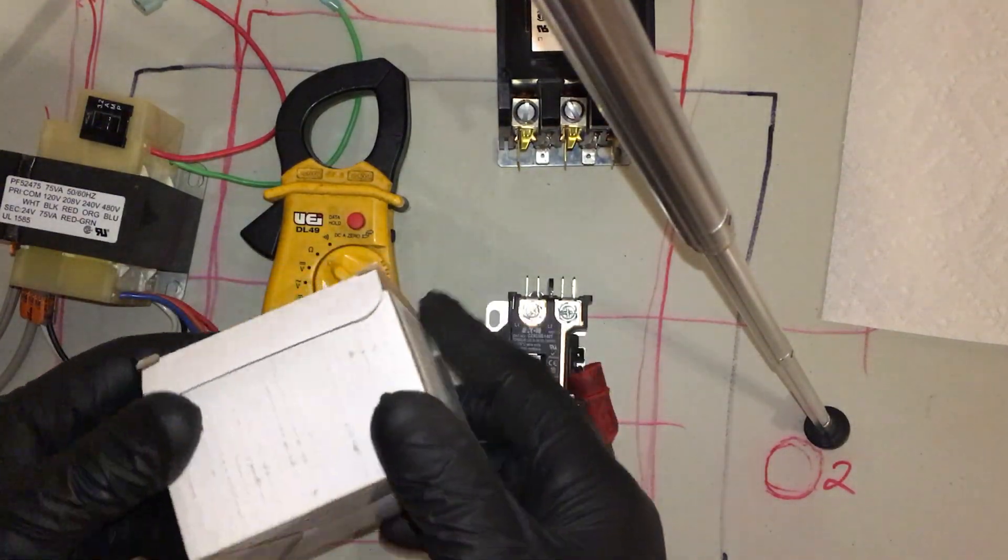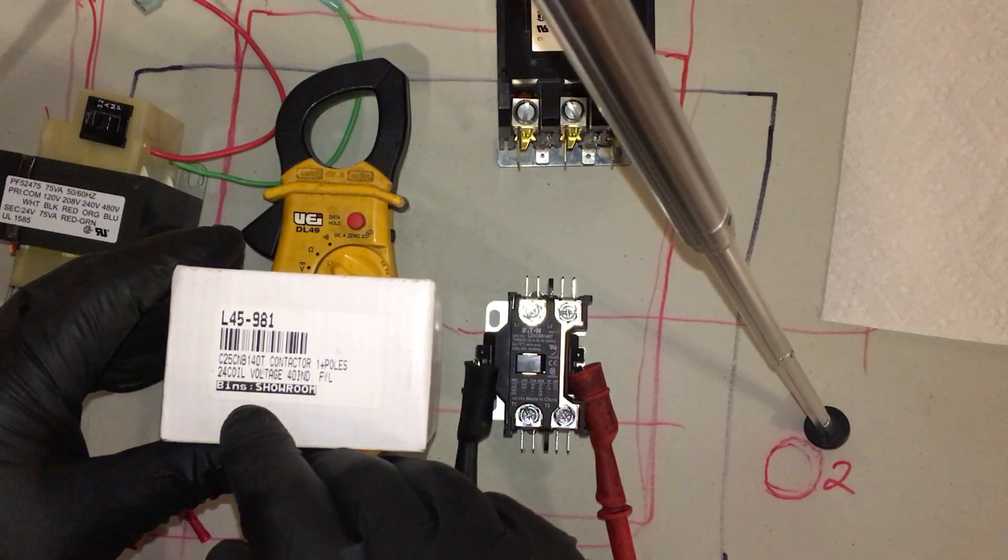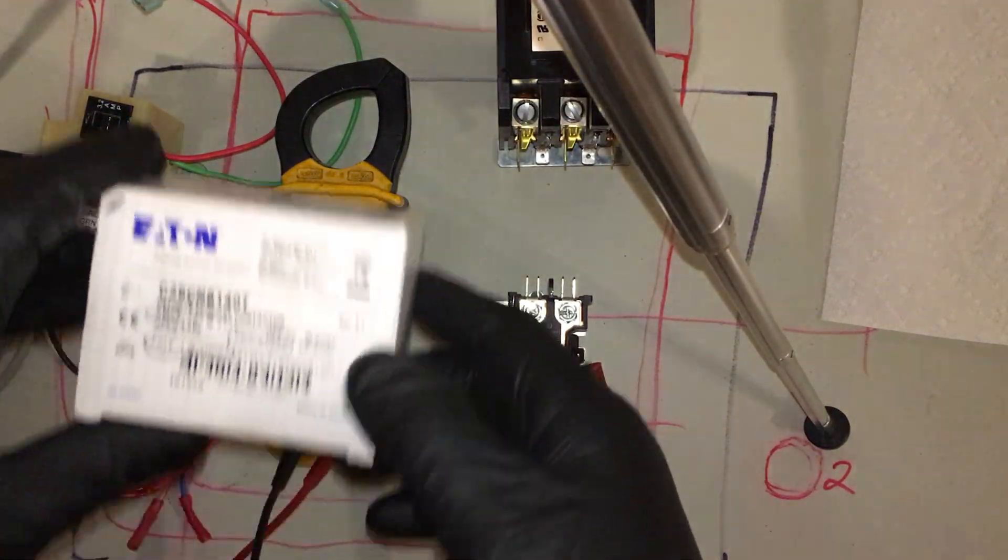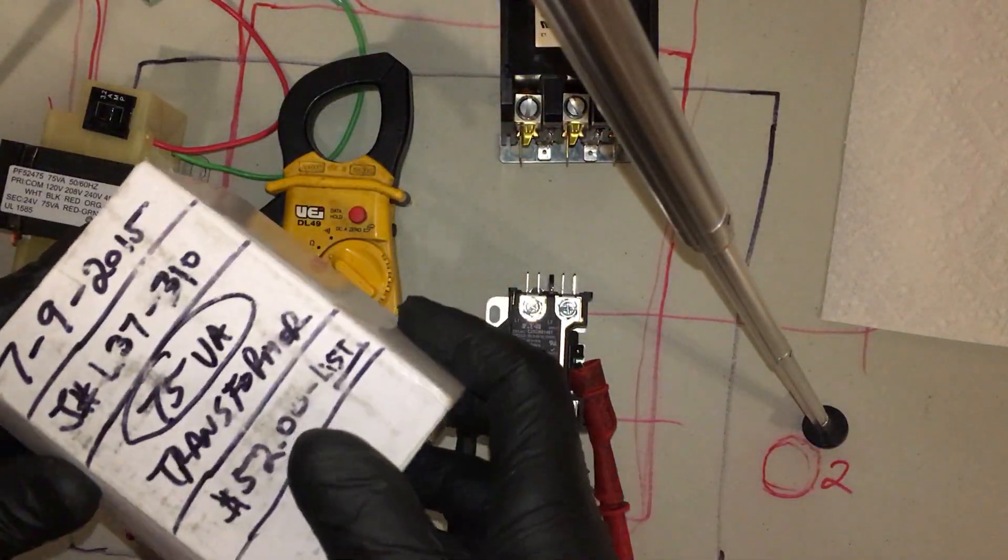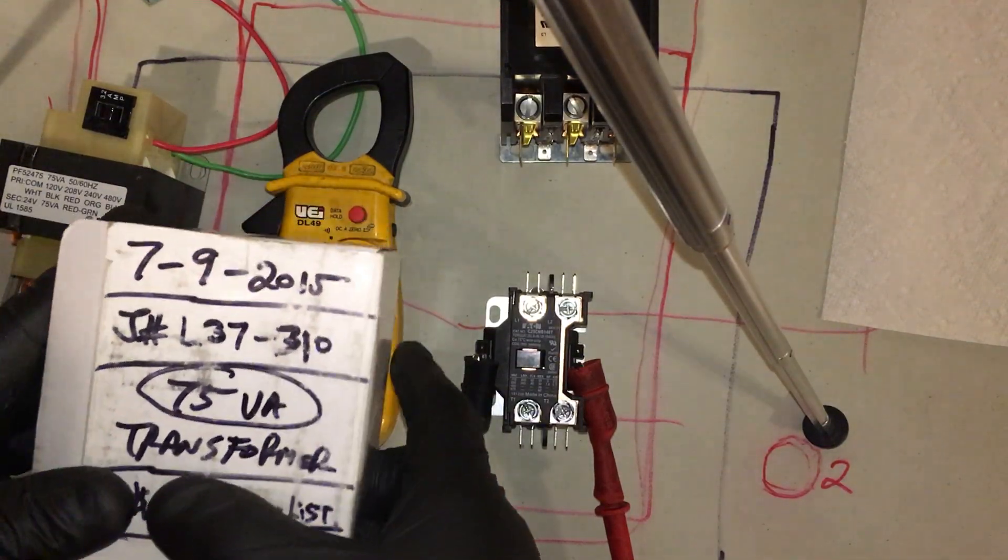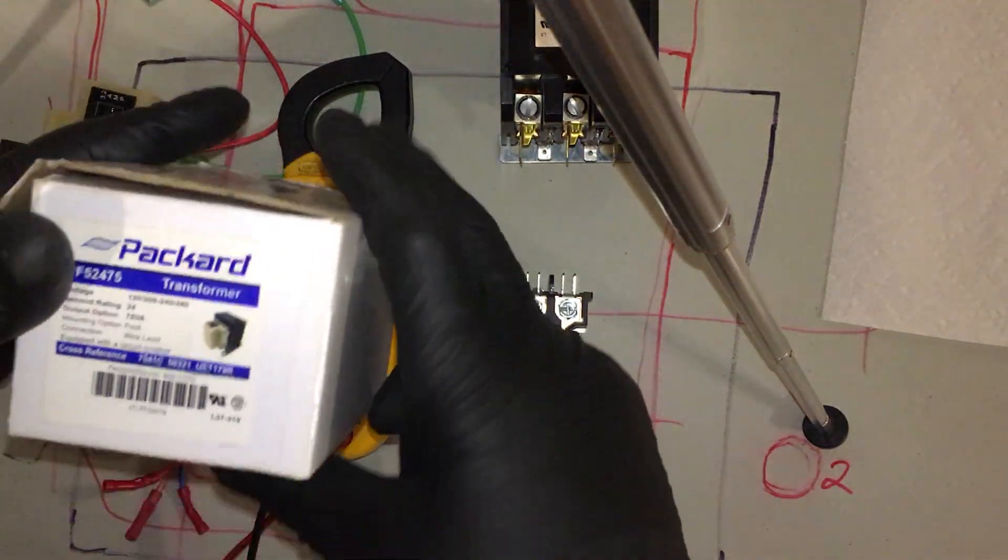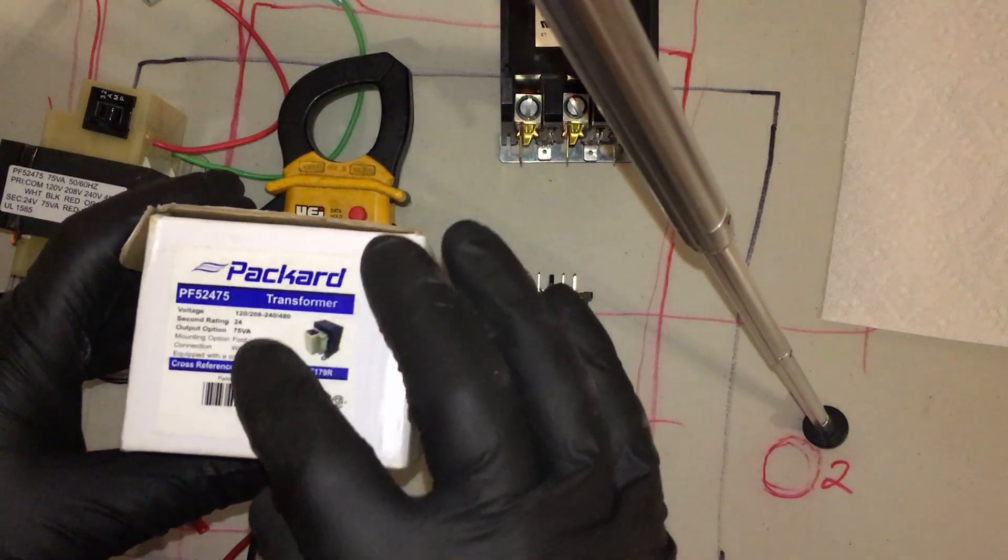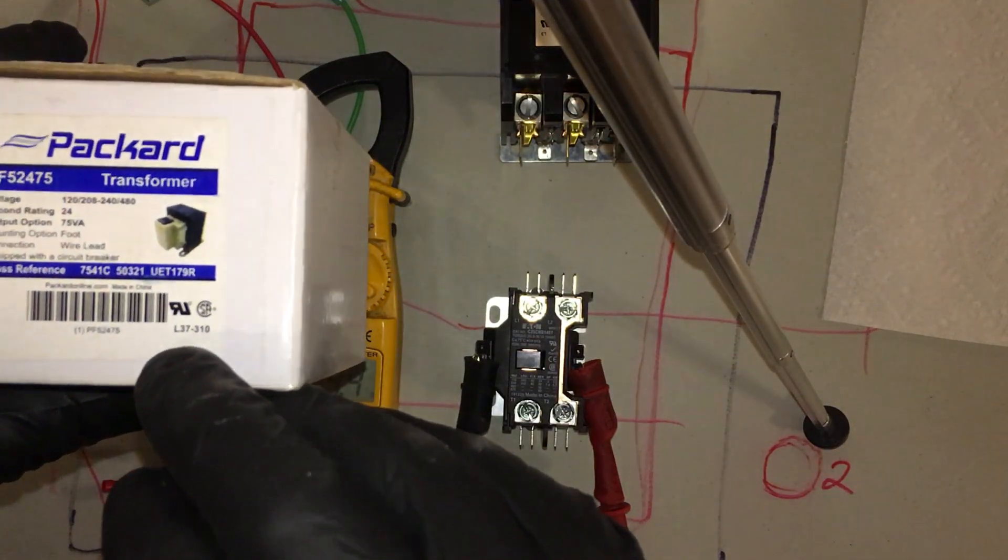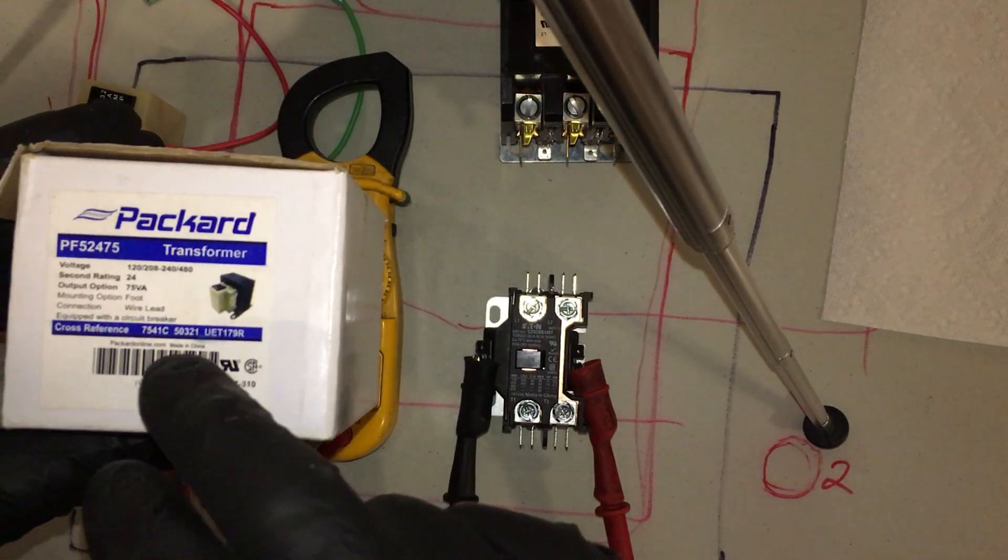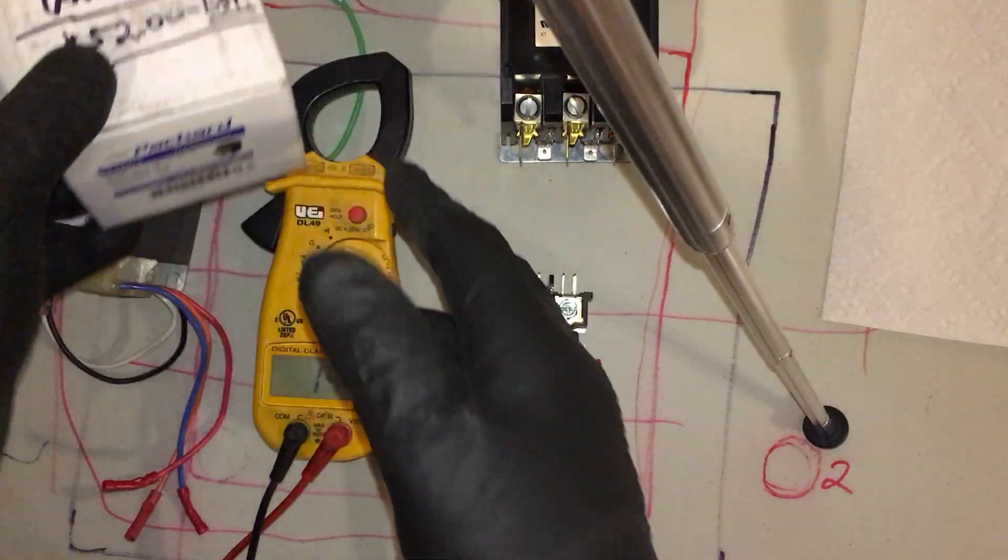For this big 75 VA, Johnstone number L37310, there's your Packard number on it. 75 VA with a circuit breaker. It's going to be 120, 208, 240, or 480 volt, 75 VA transformer.